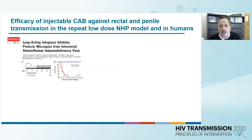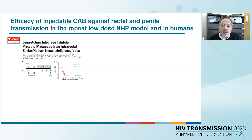The first study that provided proof of concept of long-acting cabotegravir was done at the Aaron Diamond Research Institute. This study investigated the ability of injections of cabotegravir that mimic human doses to protect macaques against rectal virus challenge. The study showed high efficacy, and was also able to identify correlations of protection. When the concentration of cabotegravir was about four times the protein-adjusted IC90, the level of protection was 100%. And when it fell to between one and three times, the level of protection was still high.